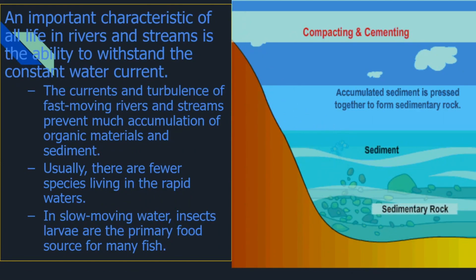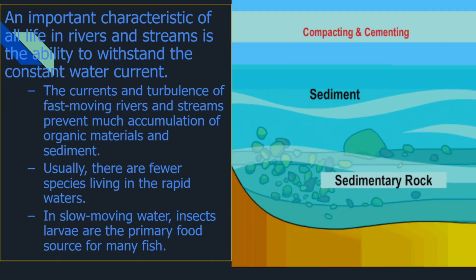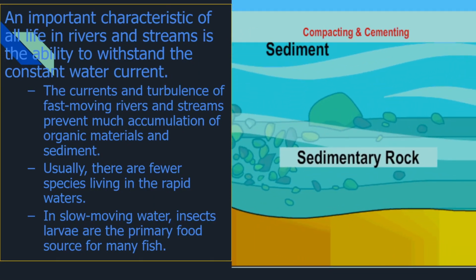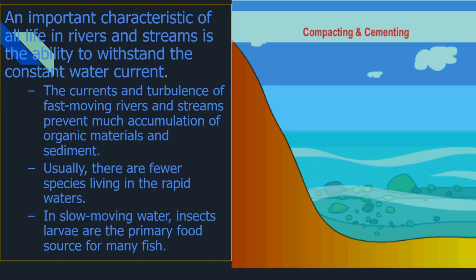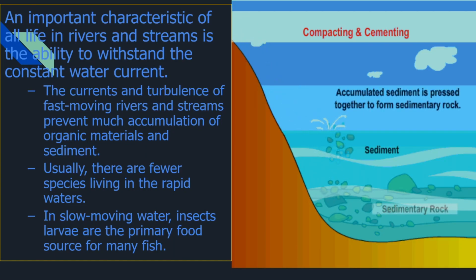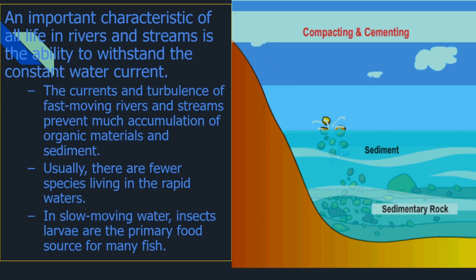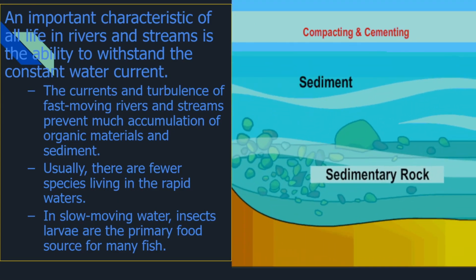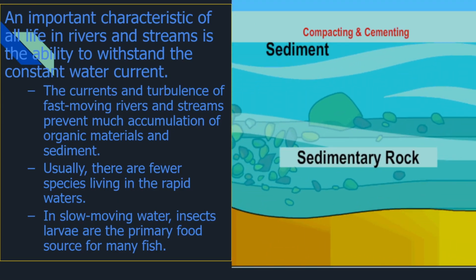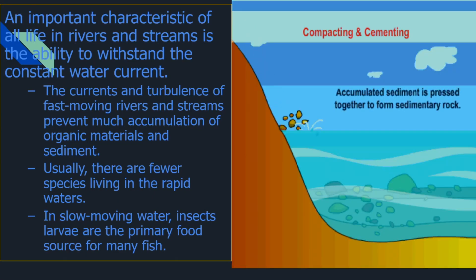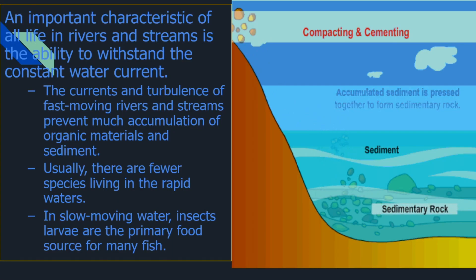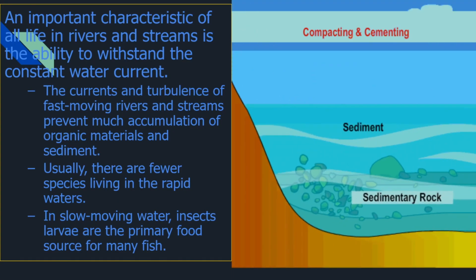Fast-moving rivers and streams don't have much sediment accumulation because the water moves so quickly that sediment doesn't have time to build up. However, because the water is moving so quickly, fewer species — with the exception of things like salmon — are able to live in the turbulent water, as it would exhaust them.